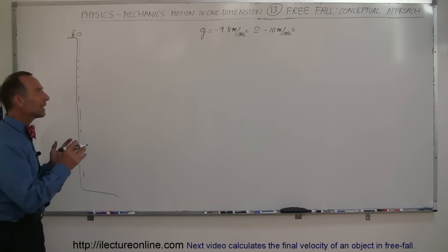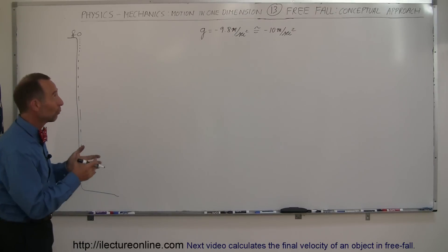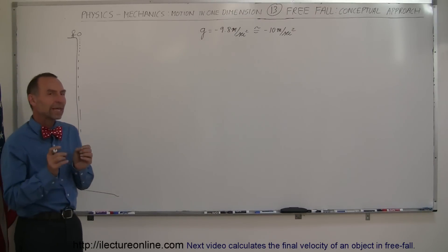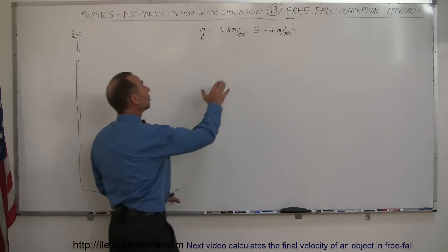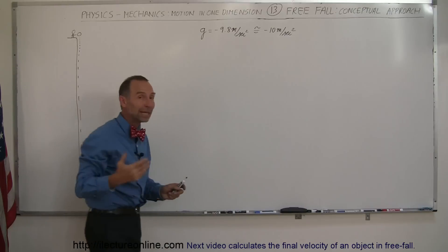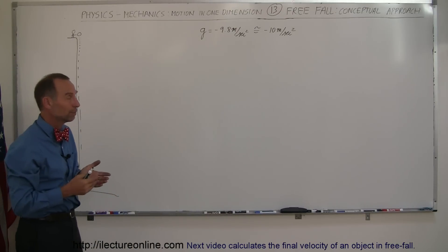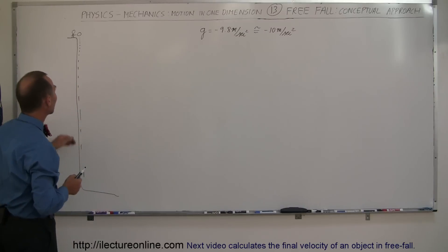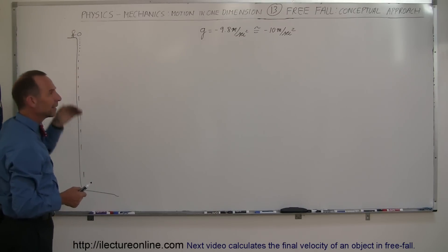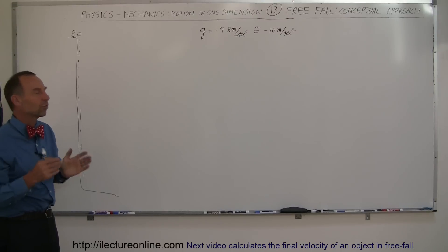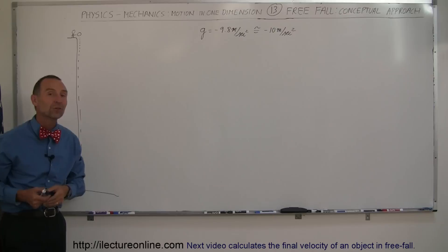Welcome to our lecture online. To gain a better understanding of free fall — another form of one-dimensional motion — we're going to look at it from a conceptual perspective. To make things a little bit easier, knowing that g is minus 9.8 meters per second squared, let's just round it off and call it minus 10 meters per second squared. What happens if someone climbs to the top of a very tall cliff and drops a ball down, assuming we can ignore wind resistance, so that the acceleration is purely minus 10 meters per second squared.